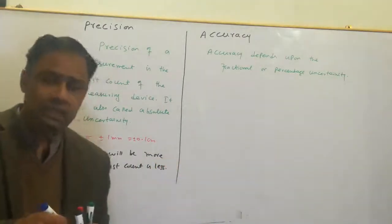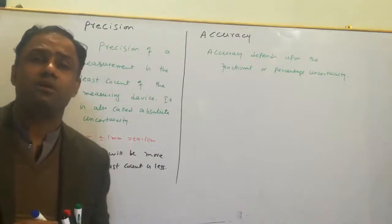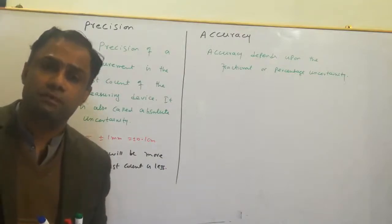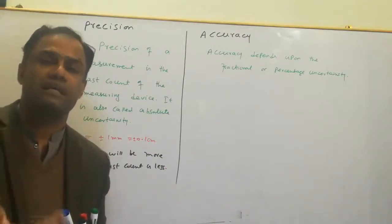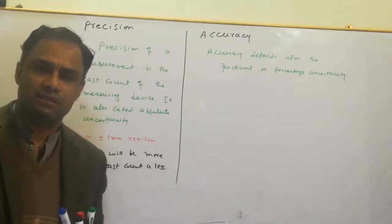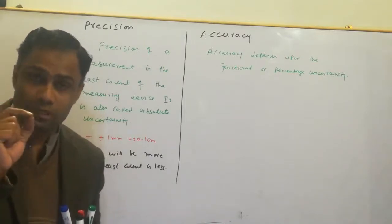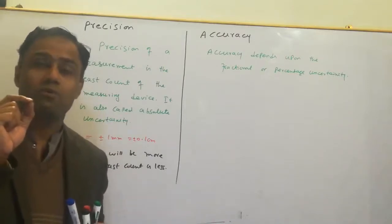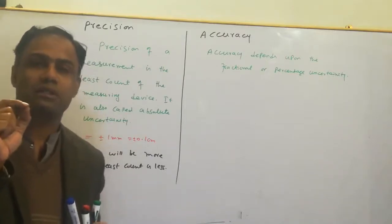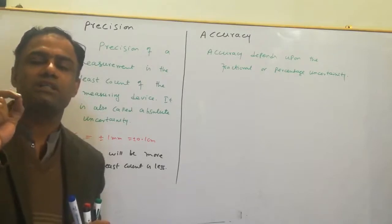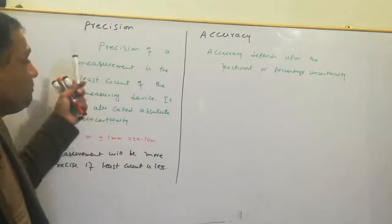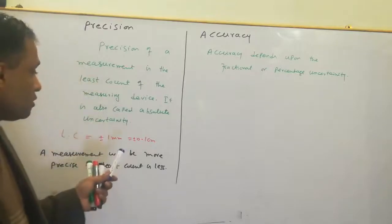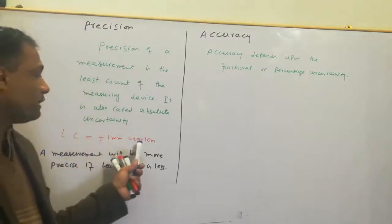For example, the least count of a vernier caliper is 0.005 cm, whereas the least count of a meter rod is 0.1 cm. So the vernier caliper is more precise than the meter rod because its least count is less.